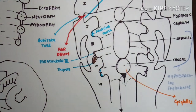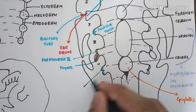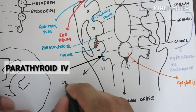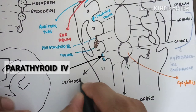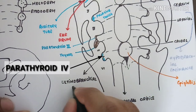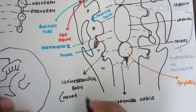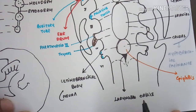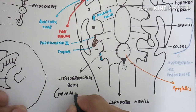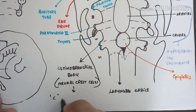The fourth pharyngeal pouch forms parathyroid four, or the superior parathyroid. It also combines with the fifth pharyngeal pouch, forming a complex called the ultimobranchial body. This complex contains neural crest cells which form the C cells, or parafollicular cells, of the thyroid gland.